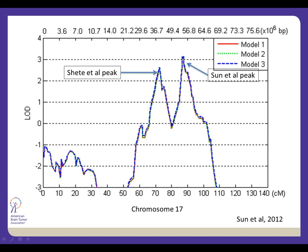This graph shows chromosome 17 left to right, with a fairly large peak. The initial paper's peak was in one location, and the second paper's peak was nearby. The region spans about 50 centimorgans — a unit of measure in genetics — which includes thousands of genes. It will take more time to identify exactly which genes under these peaks are relevant and to go back and look at whether they matter in the families.